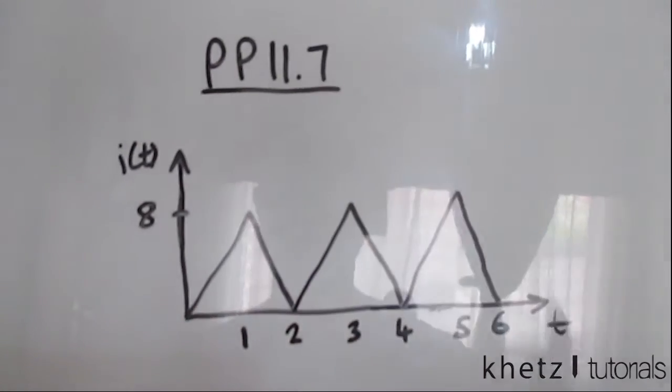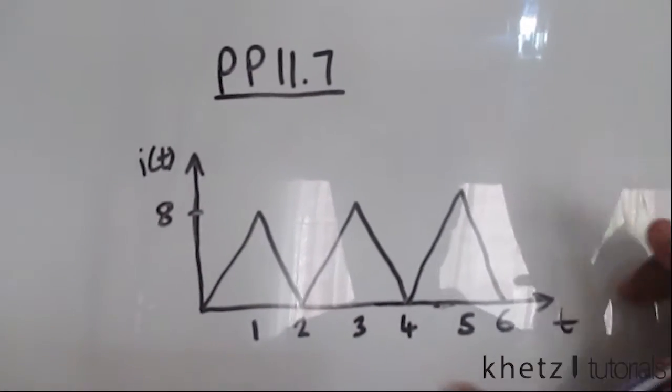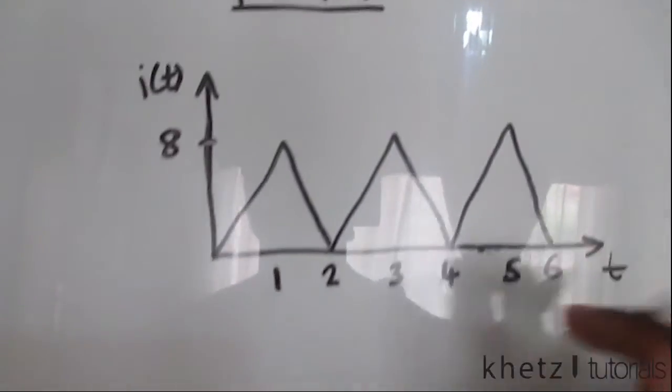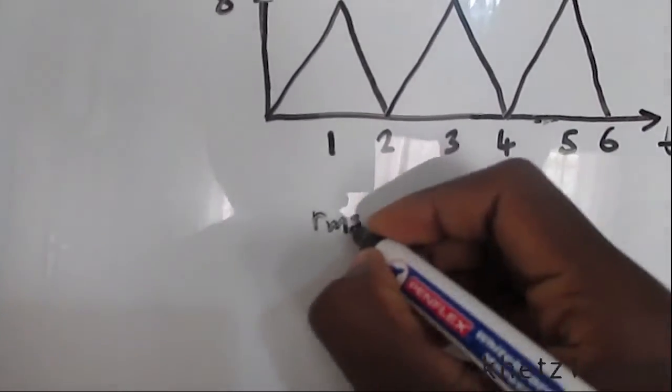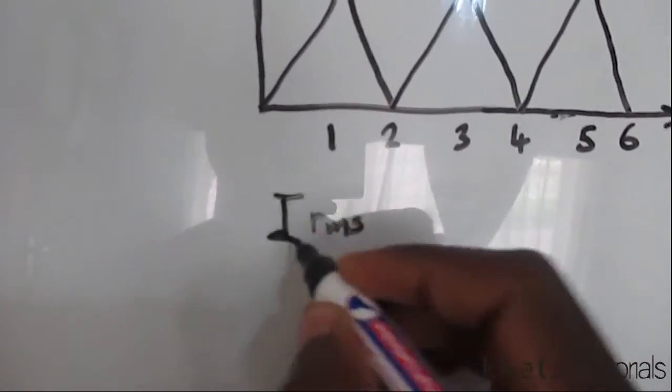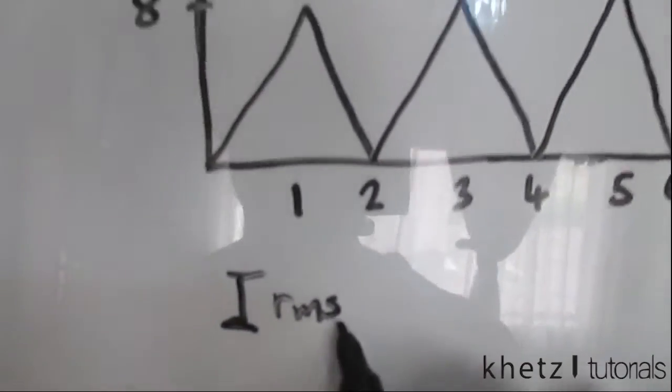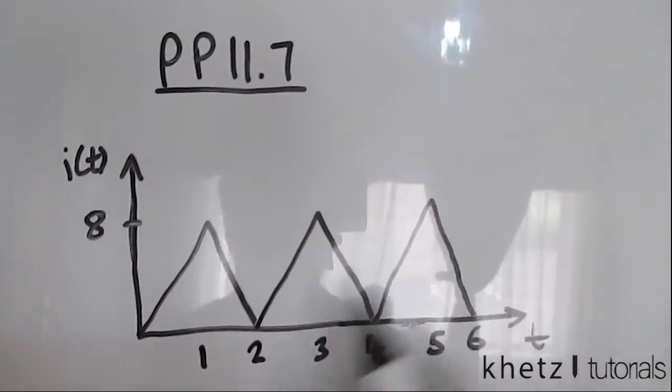Welcome to CATS tutorials. In this video I'll be covering practice problem 11.7. You're asked to find the RMS value of the current waveform, so you're asked to find IRMS given this waveform over here.